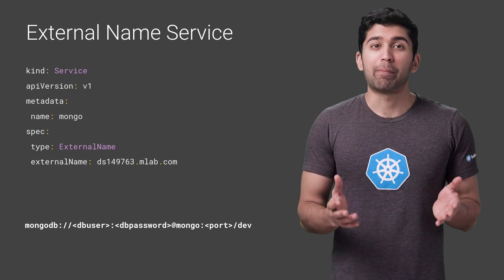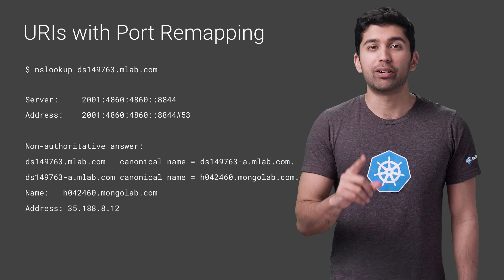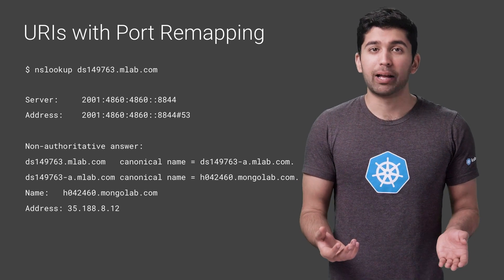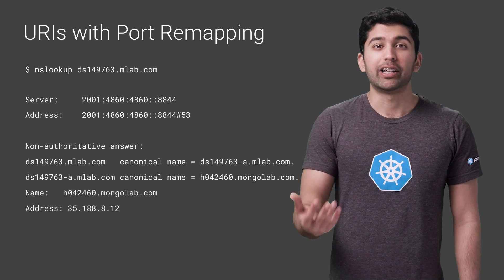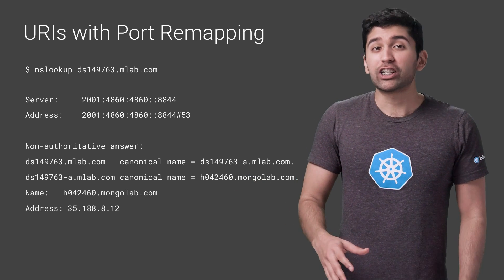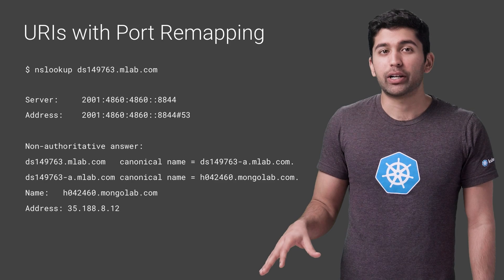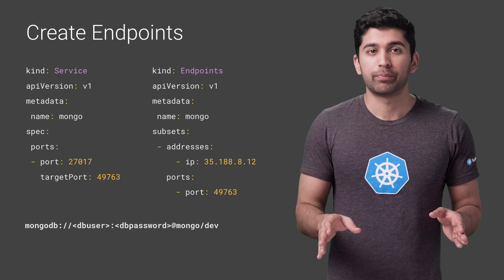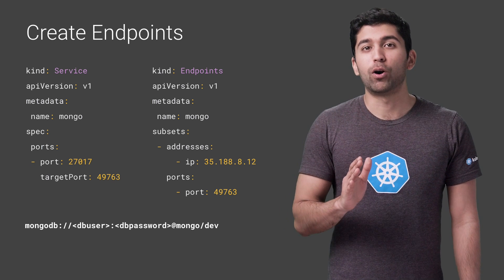So how can we get port remapping to work? The first step is to get the IP address from the URI. If you run nslookup, hostname, or the ping command against the URI, you can get the IP address of the database. If the service gives you back multiple IP addresses, you can use all of them in the endpoints object. The key thing to remember is that IP addresses behind the URI can change without notice, so this method is kind of risky to use in production if you aren't sure the IP address won't change. With this, you can connect to the remote database without needing to specify the port, as the Kubernetes service transparently does the port remapping.